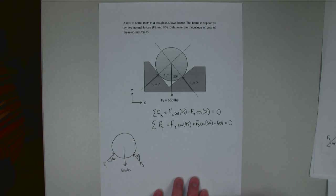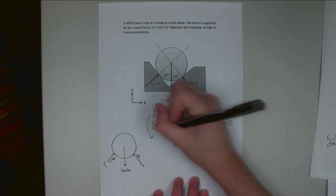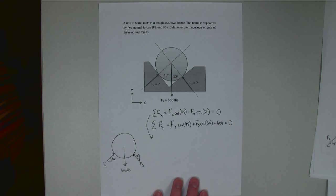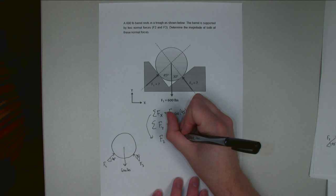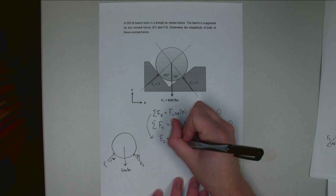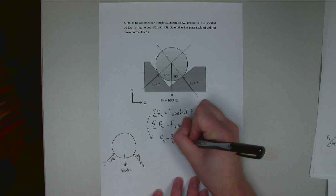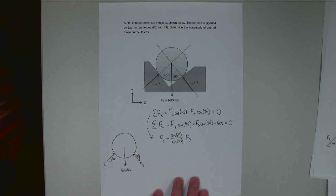Alright, so now I have my two equilibrium equations. All I need to do now is solve those equations. So I'm going to take the first part. Since both of these have two unknowns, I've got to basically solve one for one variable in terms of the other and then substitute in that value. So using this top equation, I can solve that and say that F2 is going to be equal to the sine of 30 over the cosine of 45 times F3.